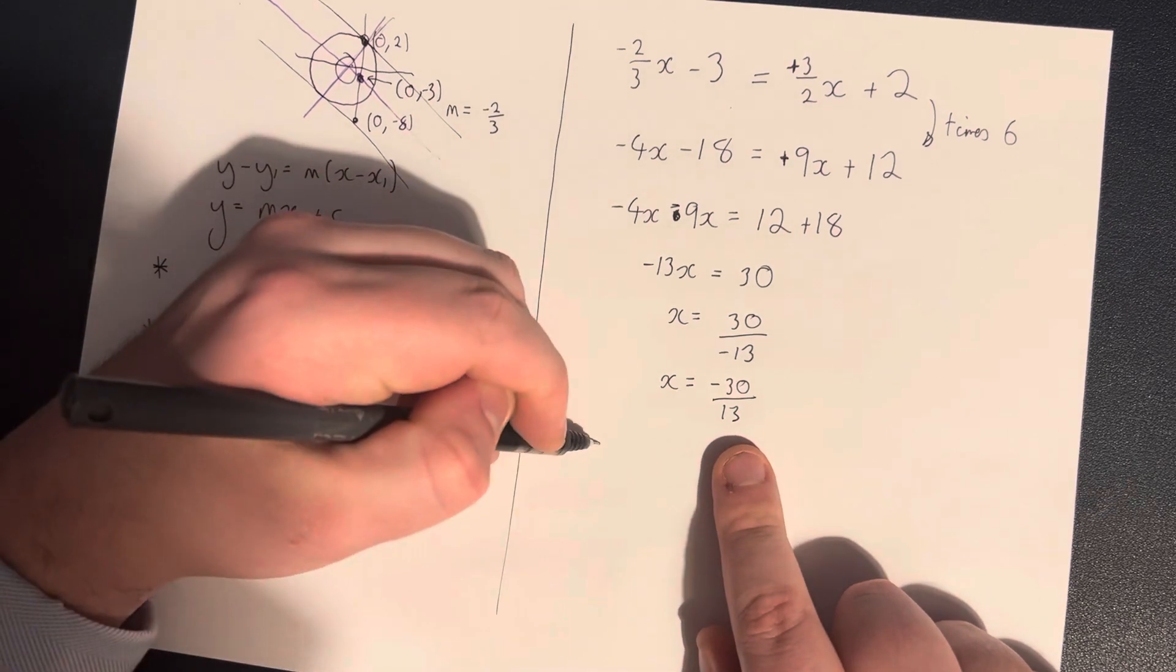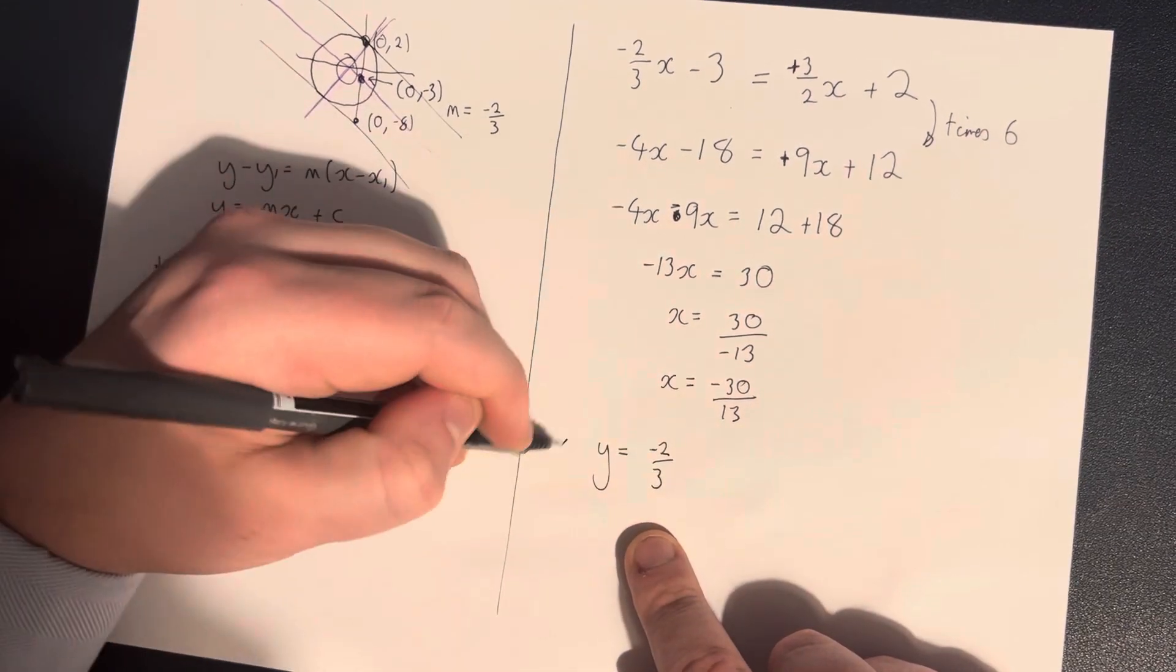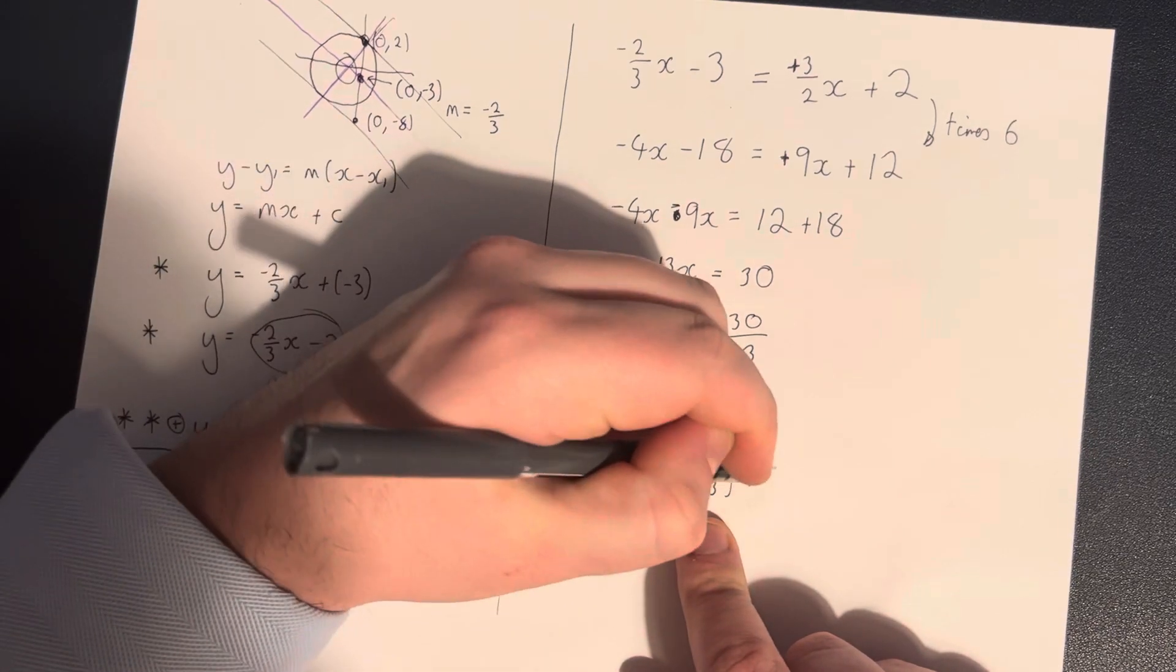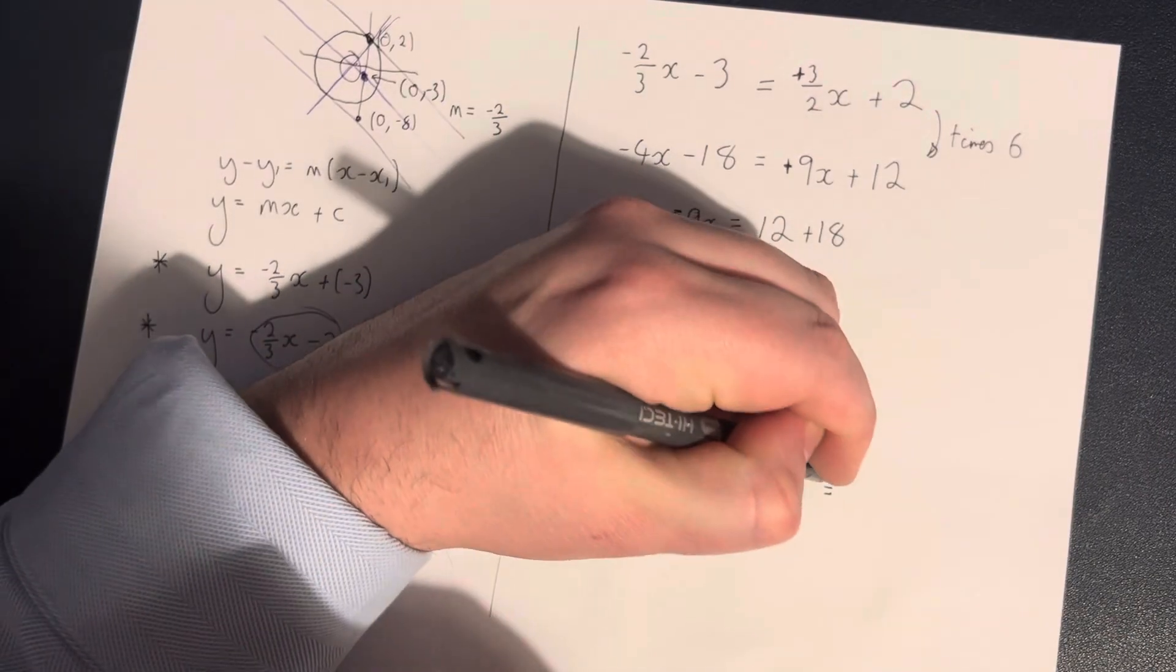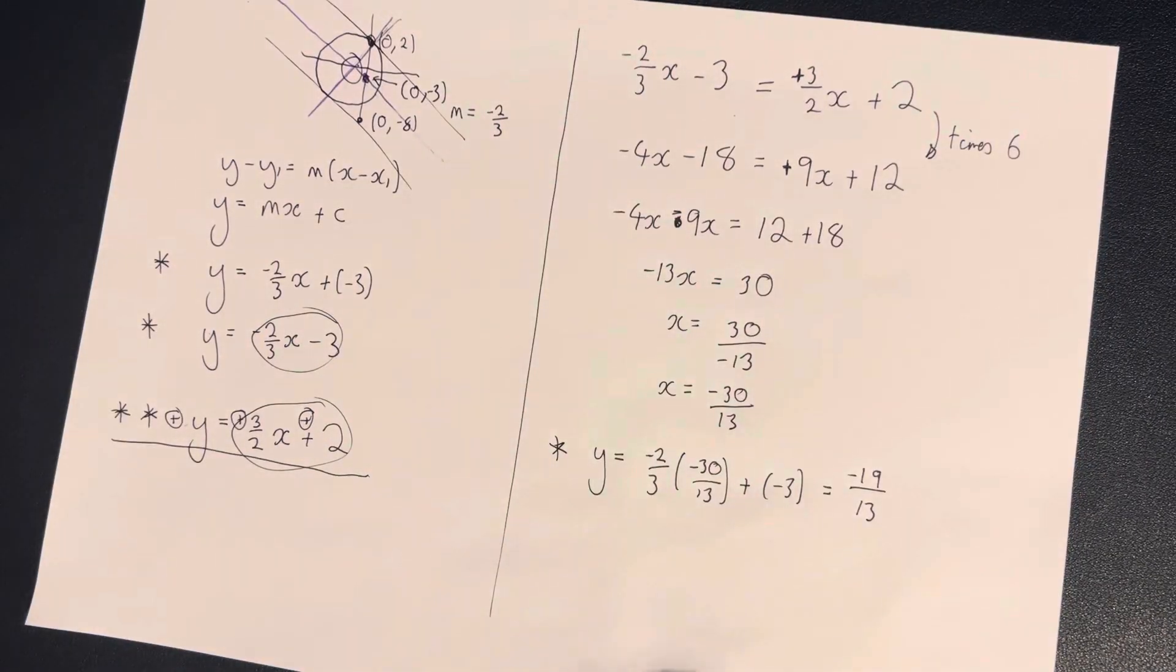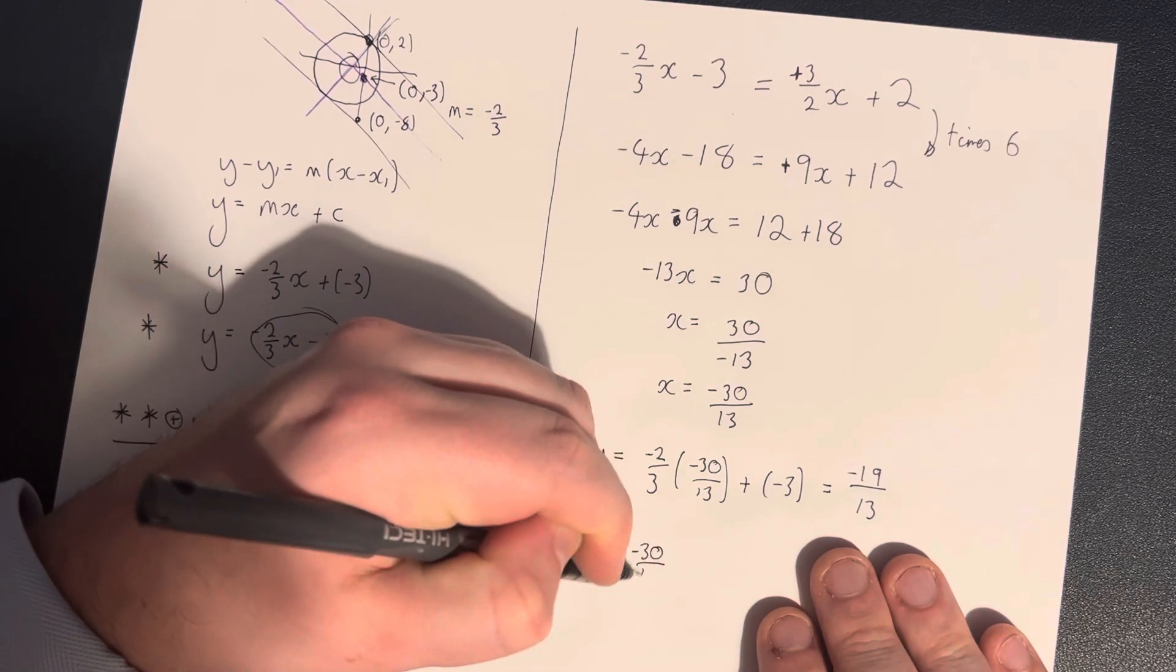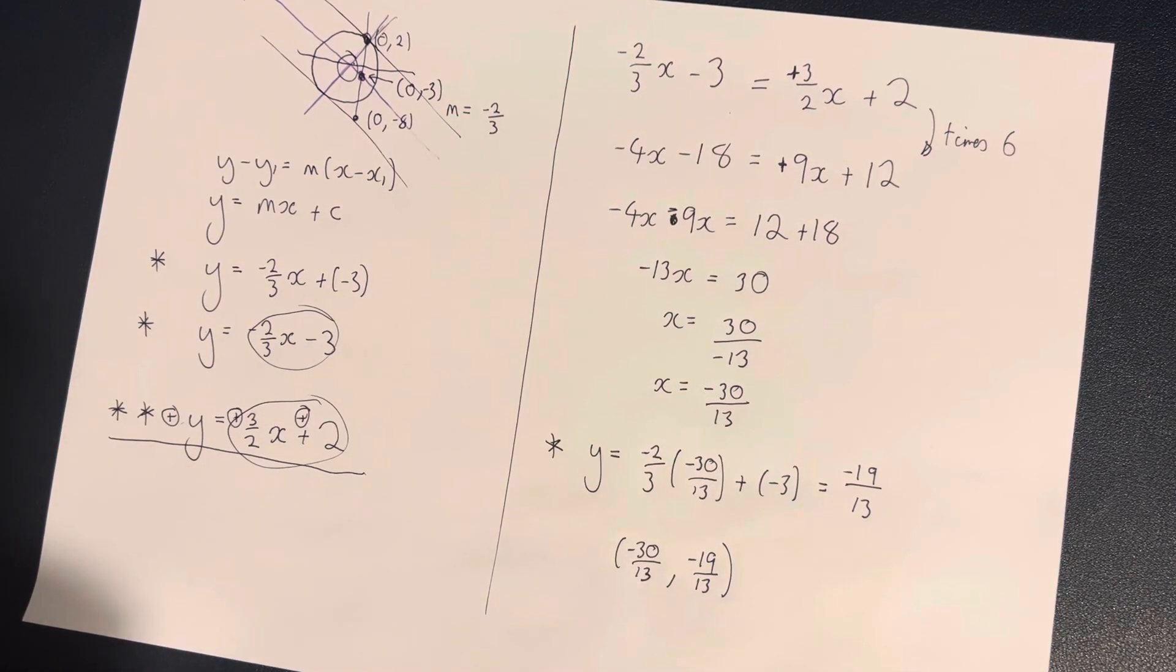And then to find the corresponding value of y, we would go with, let's pick one of these things here. So minus 2 over 3, let's deal with star, m times x, which is minus 30 over 13, plus negative 3. So that just gets bashed into a calculator. We get minus 19 over 13. So that all kind of checks out. And we now have the center point.